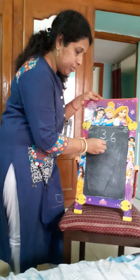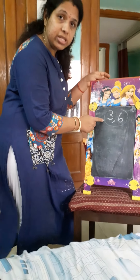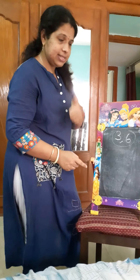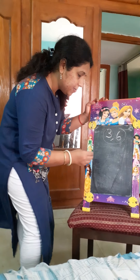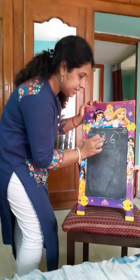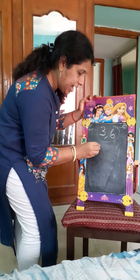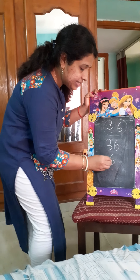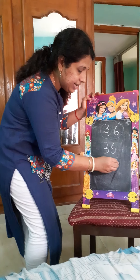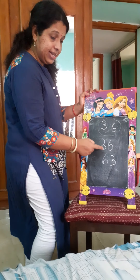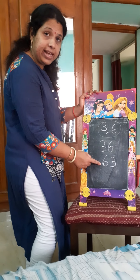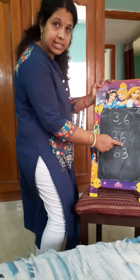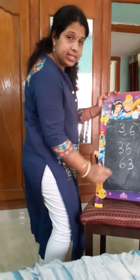Can you form a number by using these two digits? How do we do that? It is three and six, and next, six and three. So we get thirty-six and sixty-three.